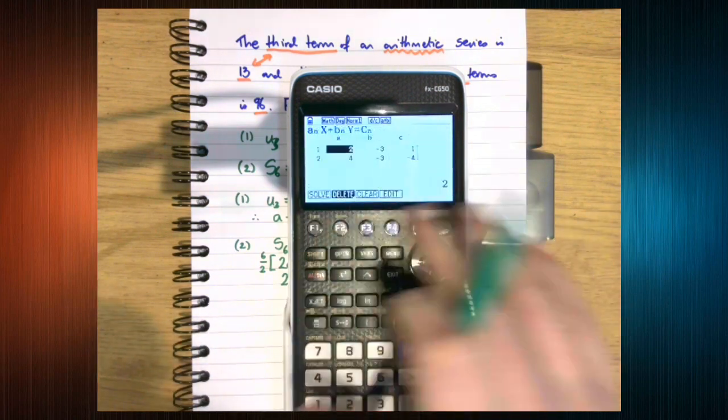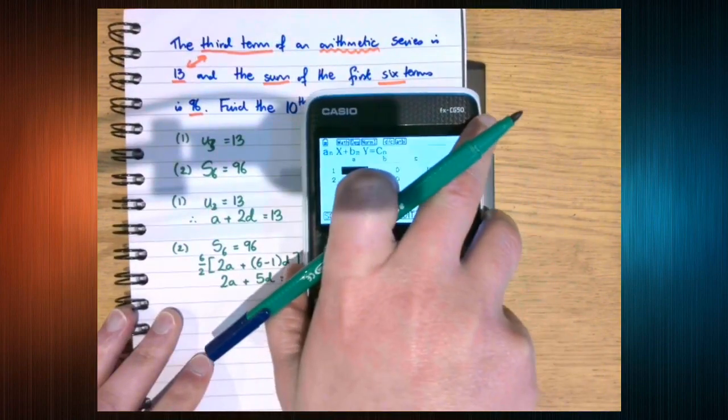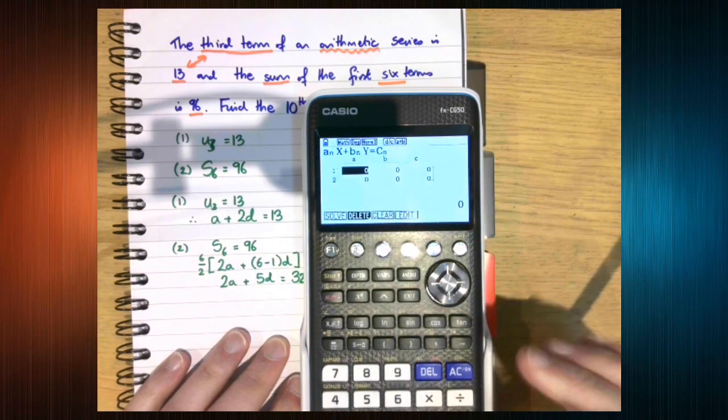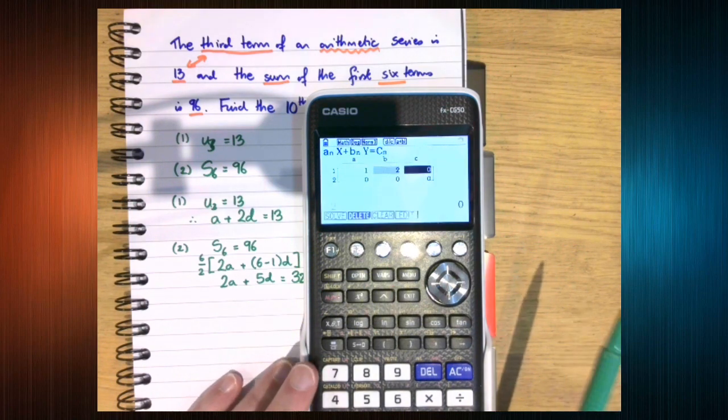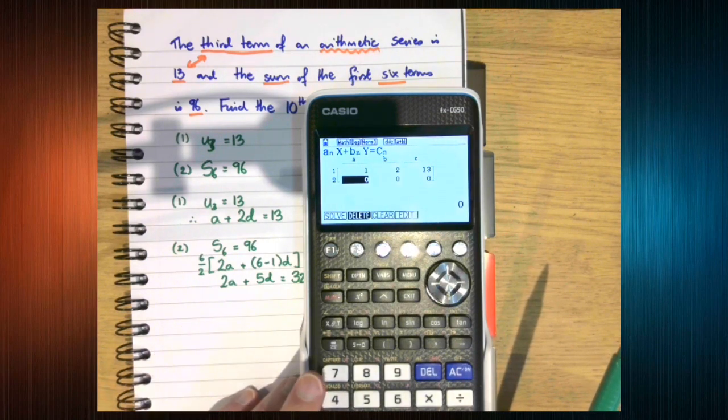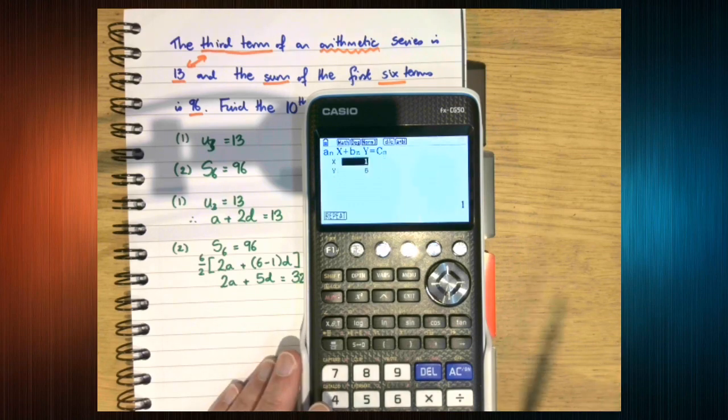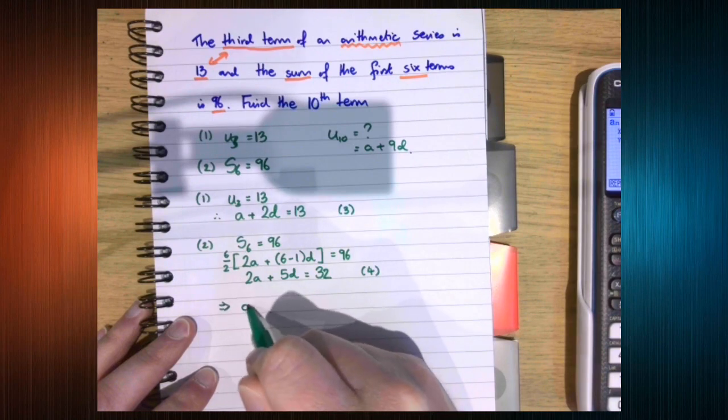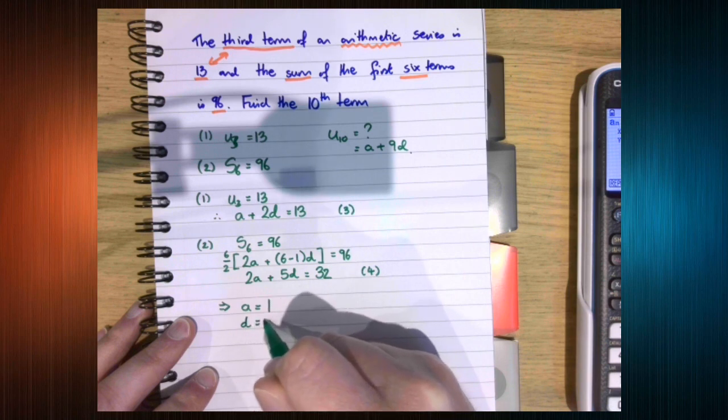Okay, so simultaneous two unknowns. Let's clear that. So we know you've got to really pay attention to x and y, because you can't rename them. So our first equation is 1x plus 2y is 13. And our second equation is 2x plus 5y is 32. Which gives us that a is 1 and d is 6.